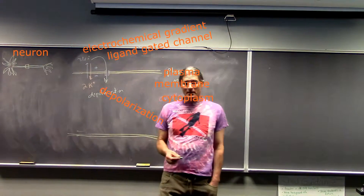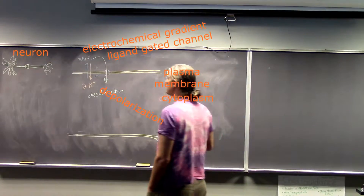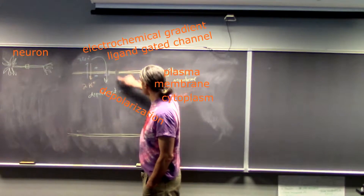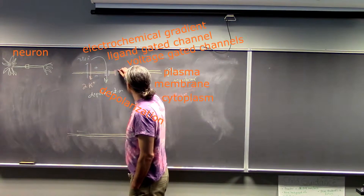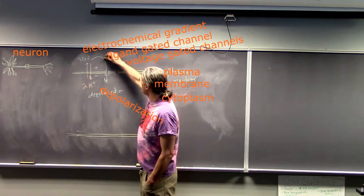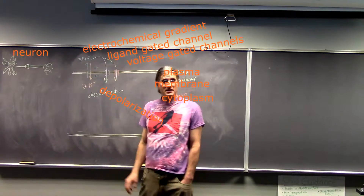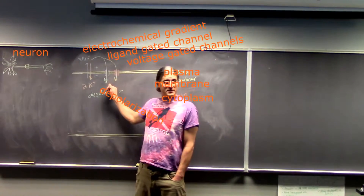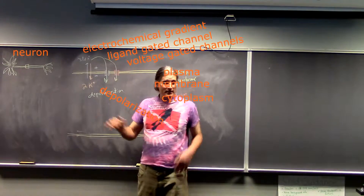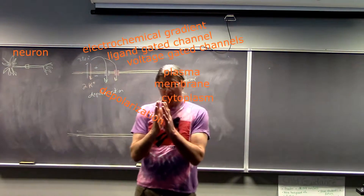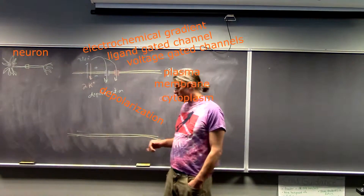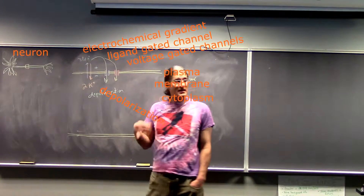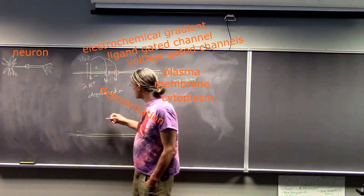We're not quite at an action potential yet, but we're getting there. Depolarization, if it is sufficient, can stimulate the voltage-gated channels to open up. At least this kind of voltage-gated channel allows sodium ions to come in. If we have enough sodium ions coming in, you get enough depolarization that locally — not globally across the cell, but immediately next to where the depolarization is happening — it causes these voltage-gated channels to open up. That happens if you reach what is known as the threshold potential.